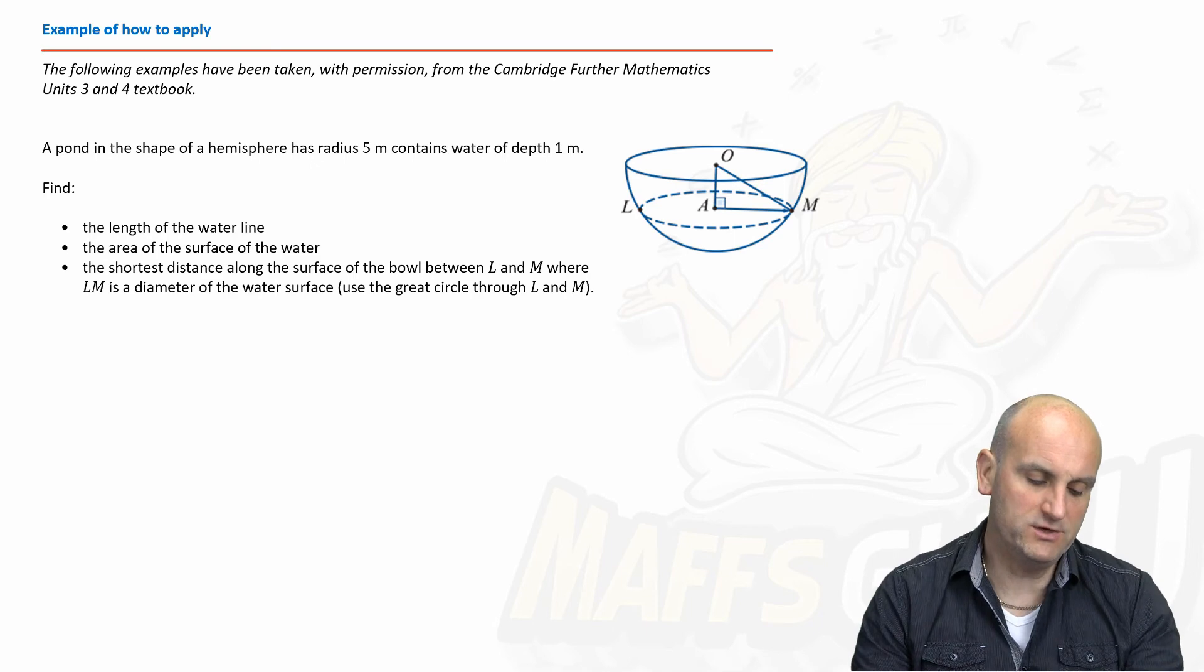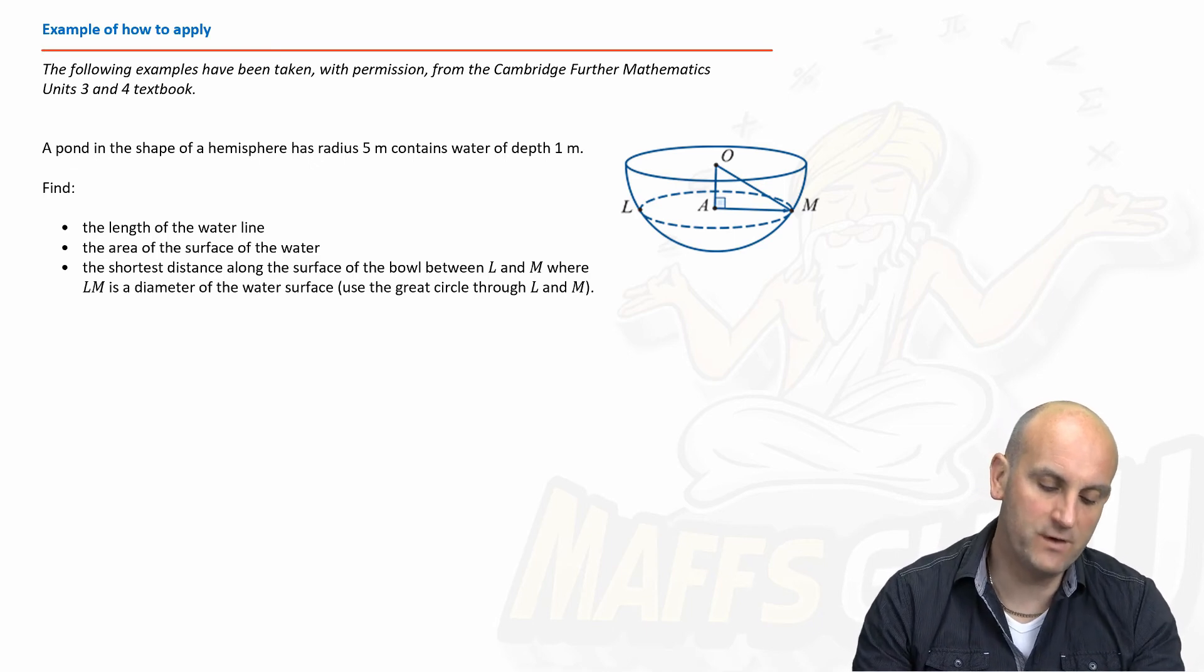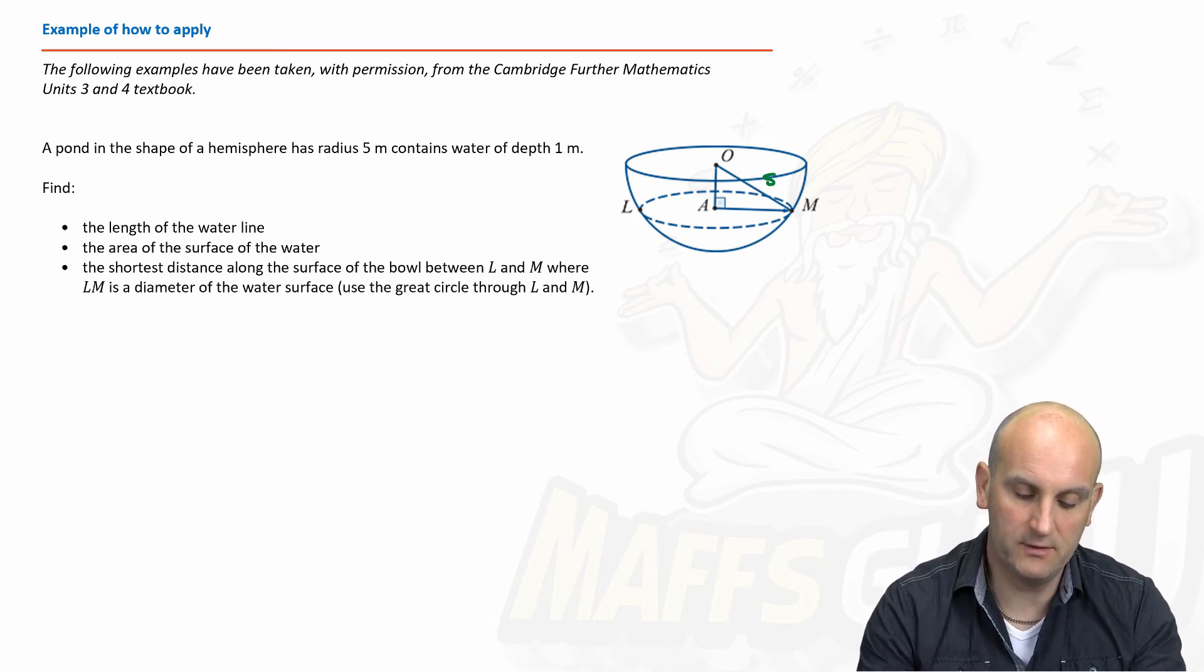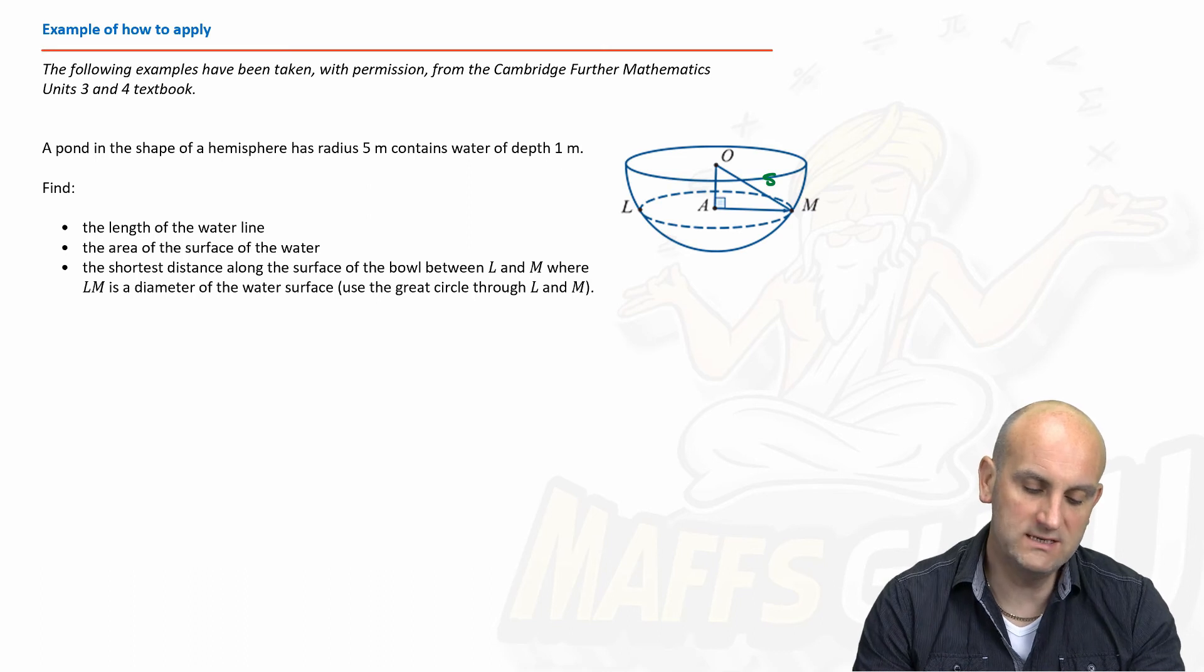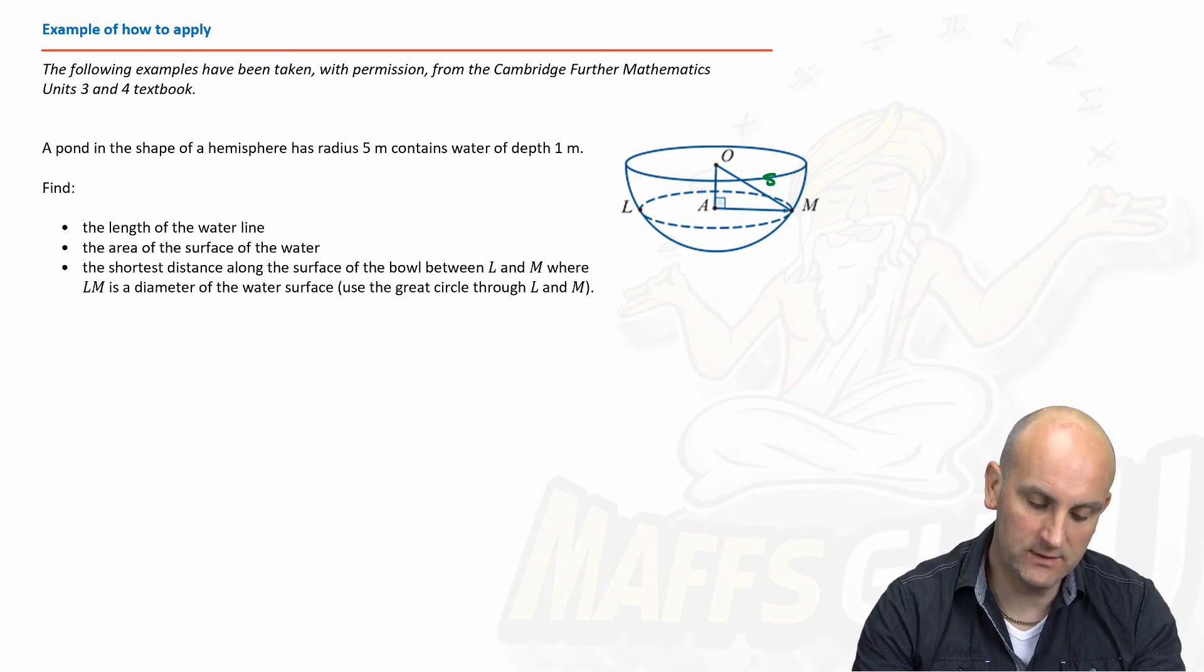A pond in the shape of a hemisphere of radius five meters. Now I haven't put anything on there but I'm going to write five and a water depth of one meter. So we know the depth from here to here is one meter.